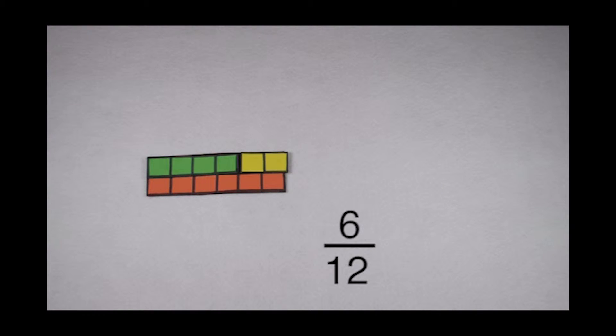Remember, factors are numbers that I can divide by that come out evenly with no remainders. This means the factors of 6 would include 1, 2, 3, and 6.